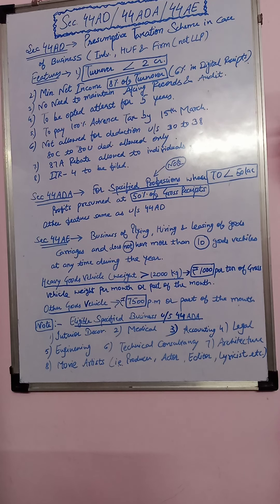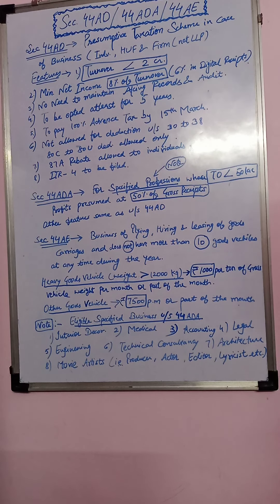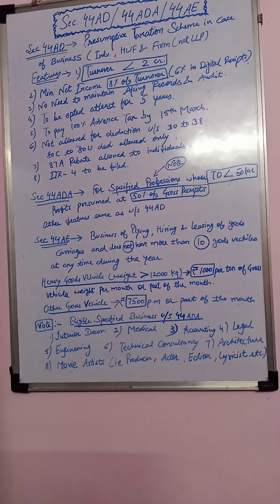What are the schemes available to you? Who can avail these schemes? Only individual, HUF, and firm, but not LLP. These are the assesses who can avail these schemes. Section 44AD is for those who are carrying a business, so he can avail 44AD.